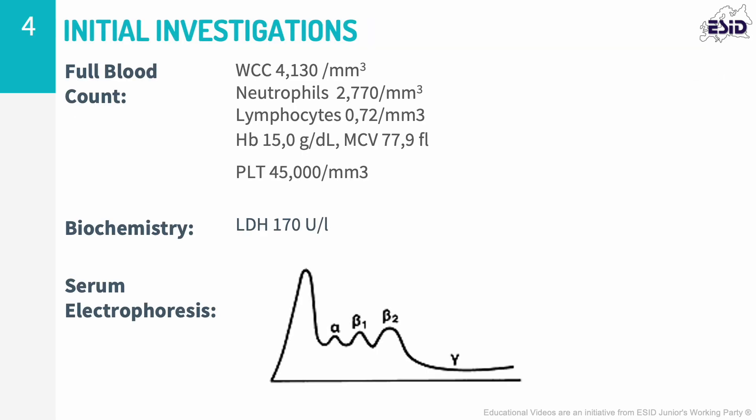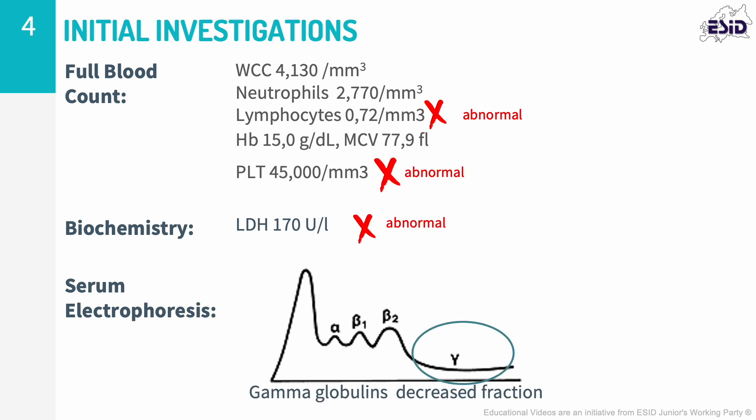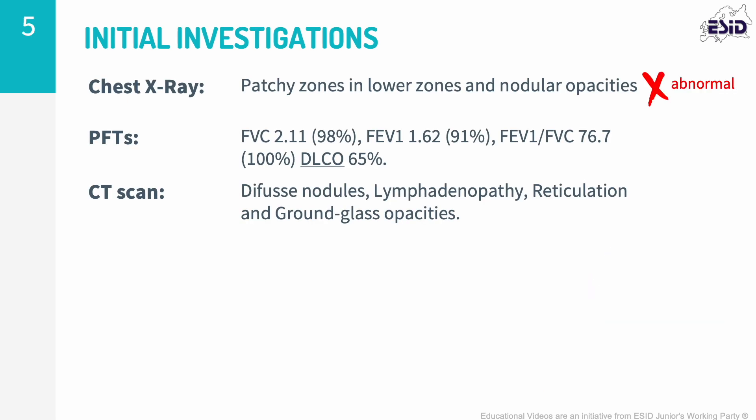Initial investigations revealed lymphocytopenia, thrombocytopenia, and a decreased gamma fraction on serum protein electrophoresis. A sputum sample was also positive for Haemophilus influenzae. Chest X-ray showed bilateral patchy zones and nodular opacities in the basal region of both lungs.